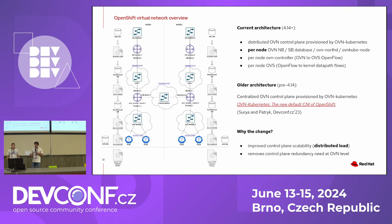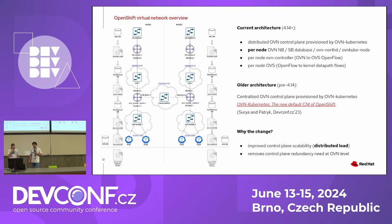In the older architecture, everything was more centralized — we're not going to discuss that today because Surya and Patrick did a really good job last year at DevConf presenting it. Why did we move between the two? It improved control plane scalability — we now distribute the control plane load. It removed the need for additional control plane redundancy in OVN, because our central source of truth is the Kube API and there's redundancy there already. Each node basically runs its own OVN cluster, translating the Kube API configuration to OVN routers, switches, load balancers, and eventually OpenFlow and kernel datapath flows.